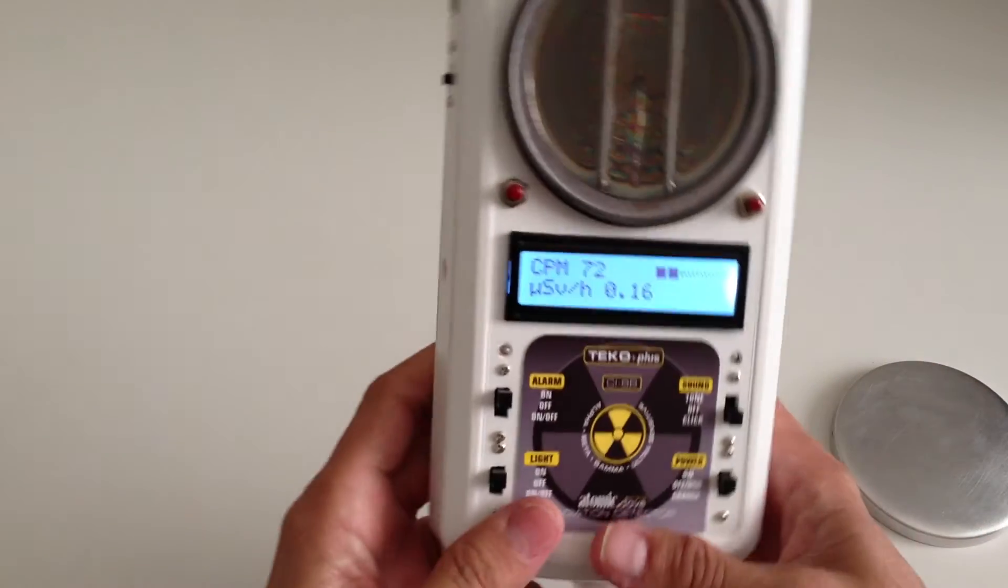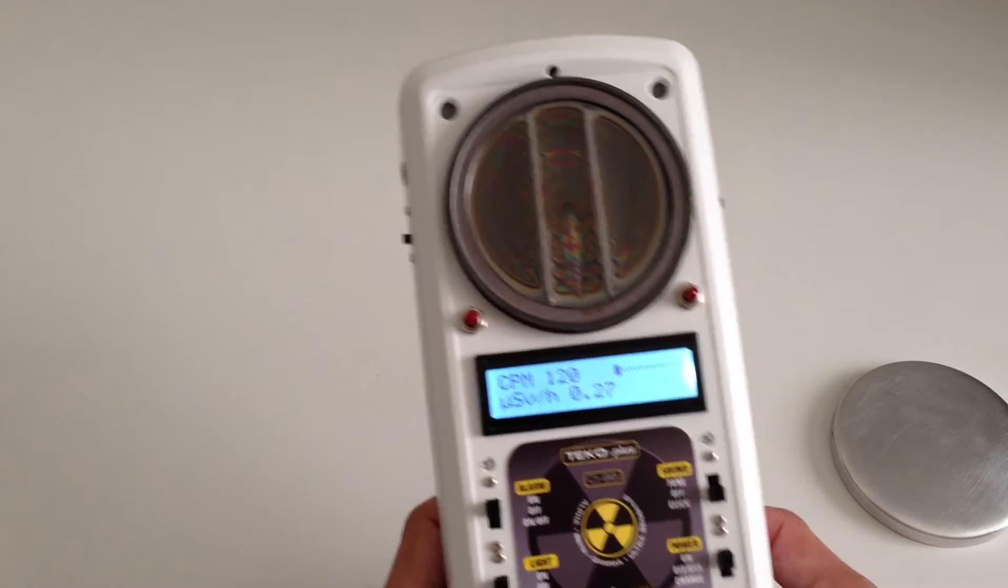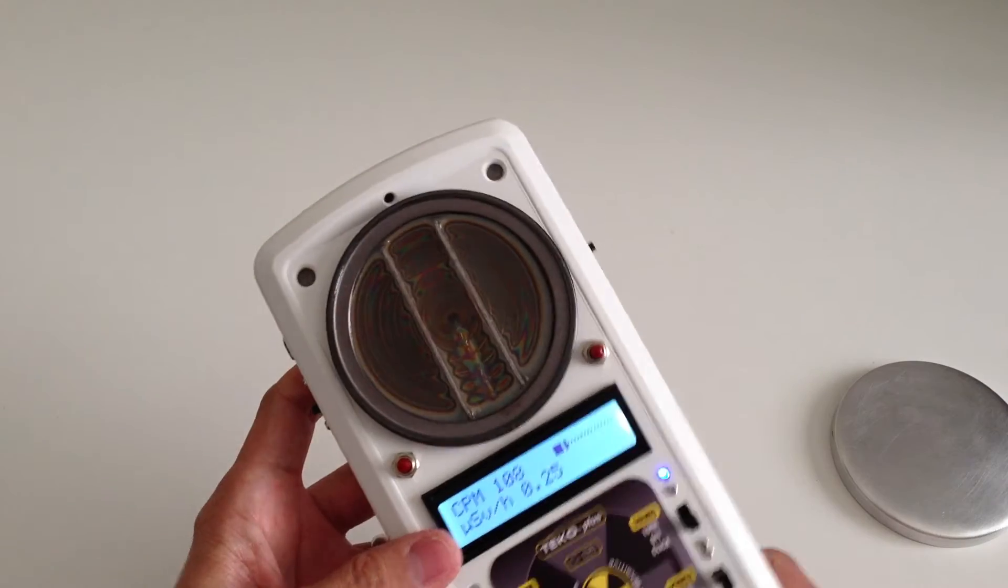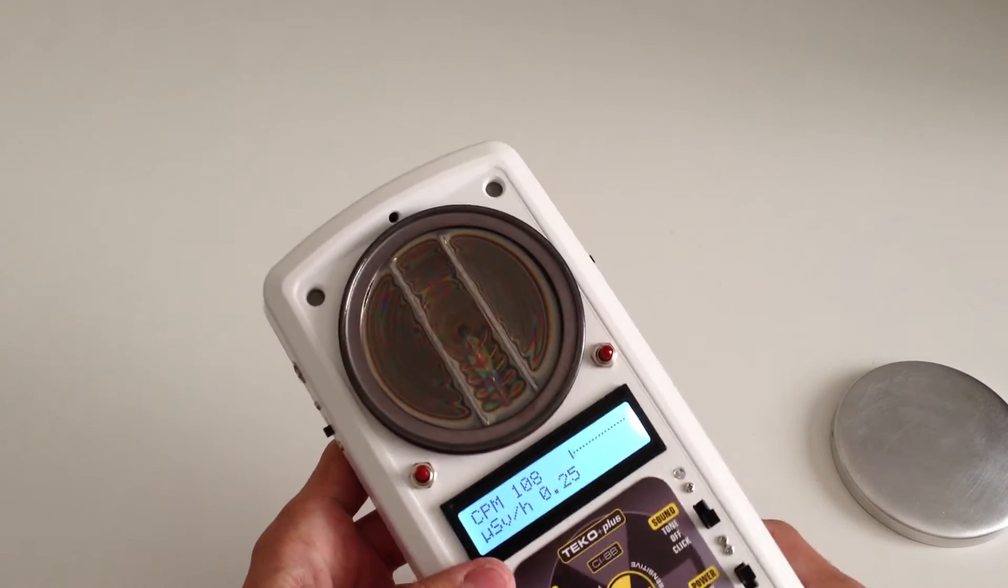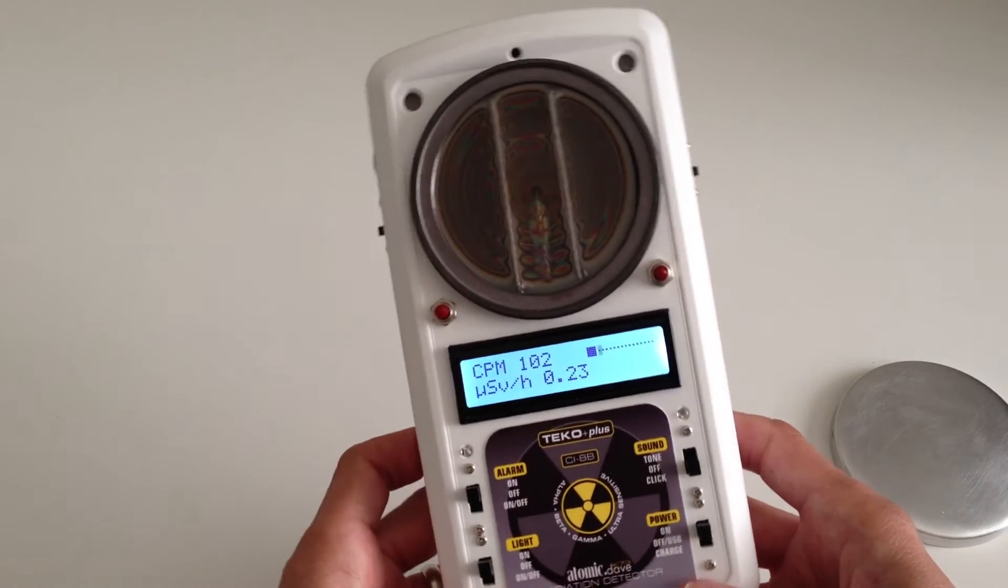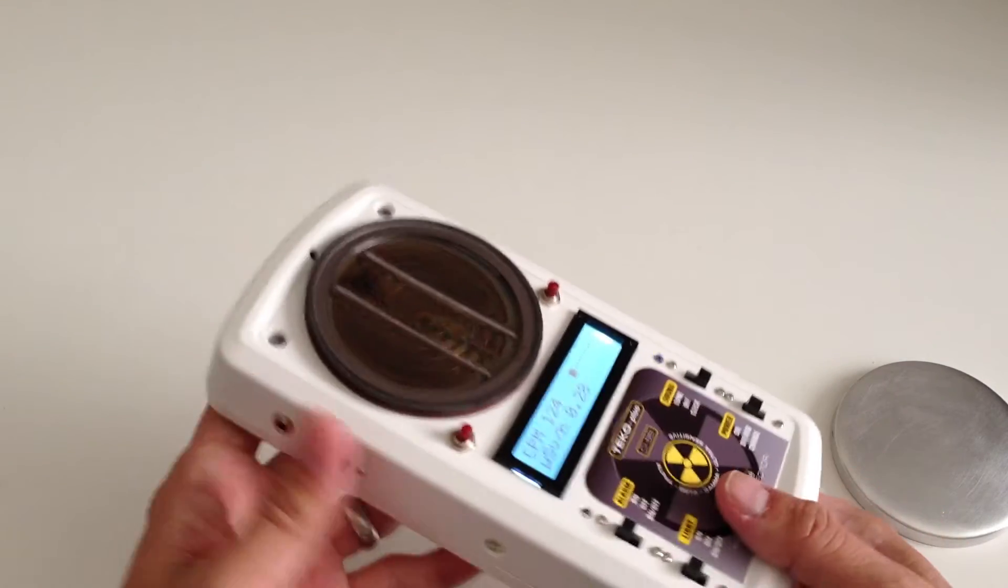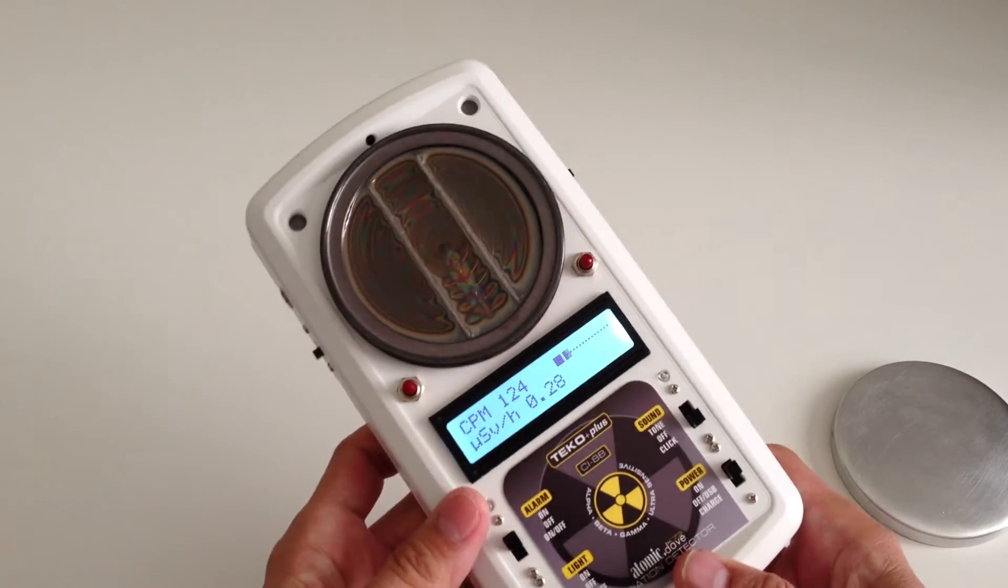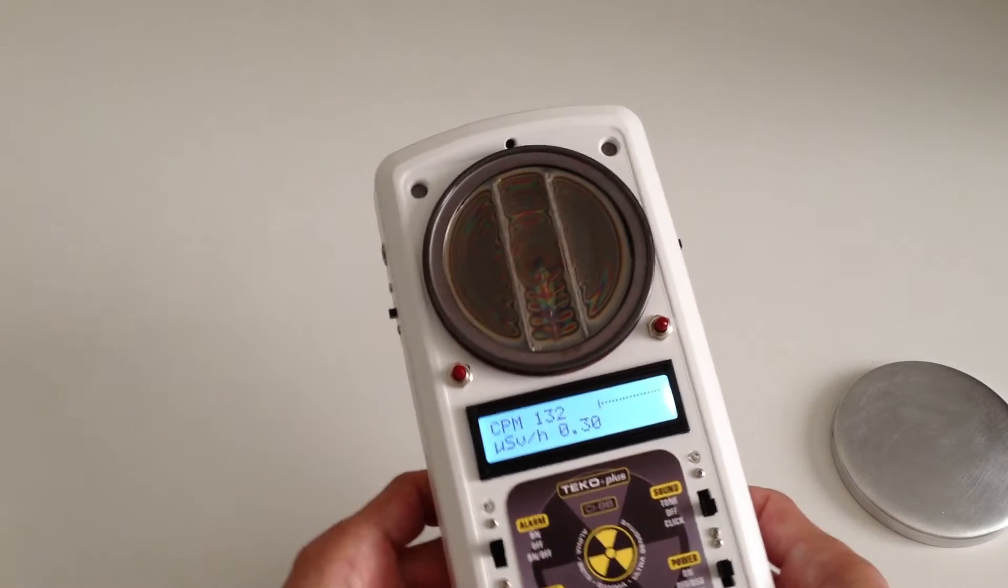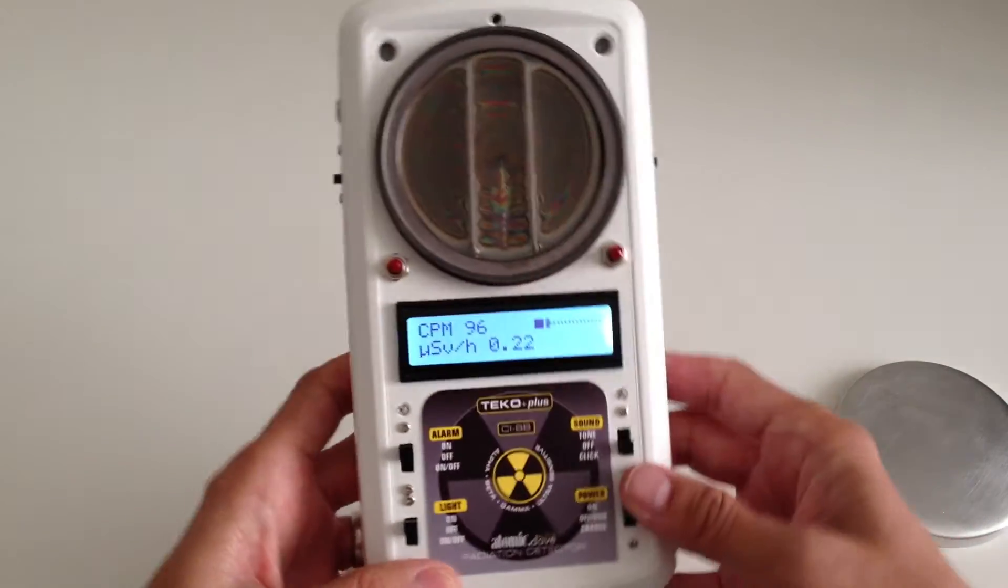And one thing that you have to get used to with this unit is that because it's such a sensitive tube that the background radiation is usually two to three times more than you're used to, and about averaging about 100 to 120 CPM. So don't be shocked when you see that. I mean, don't feel like you got to run from the area, but it's pretty sensitive. So you have to base your background levels at a higher level.